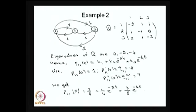The initial conditions are used along with the Q matrix values. Q₁₁ — the (1,1) element — is nothing but P'₁₁(0). Similarly, the (1,1) element of Q² gives P''₁₁(0). Using these three initial conditions, the unknowns k1, k2, and k3 are determined, and then P₁₁(t) can be written explicitly.